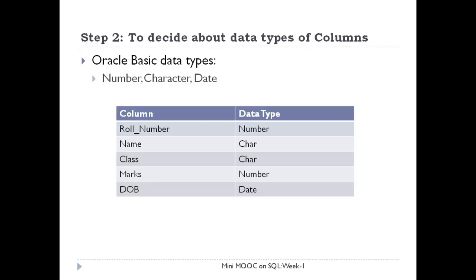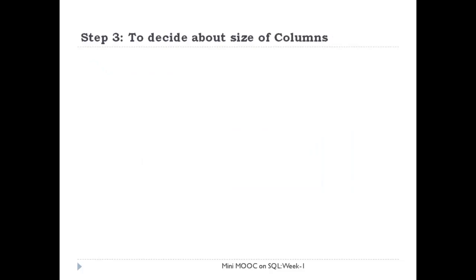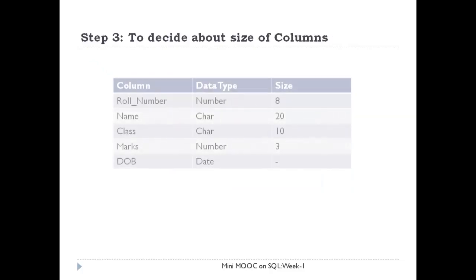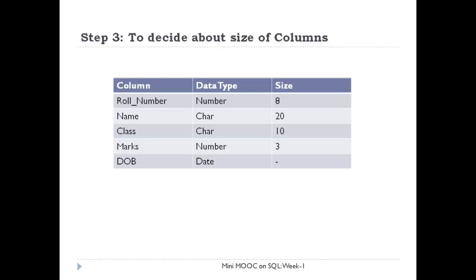The next step will be to decide about their size. Role number may be of maximum 8 digits, so let's keep its size as 8. Name may be of maximum 20 characters, so keep its size as 20. Class as 10, marks as 3. And for date of birth, there is no need to specify its size, as Oracle automatically defines it to accommodate day, month, year and time information.